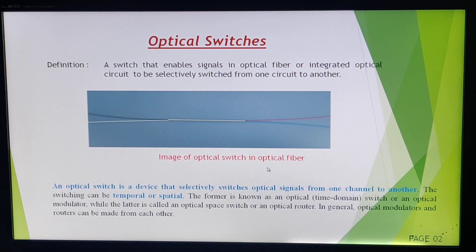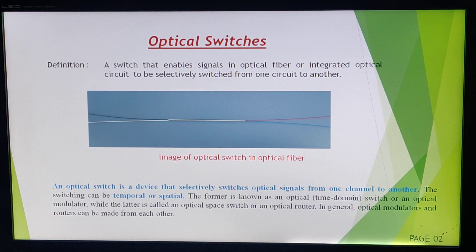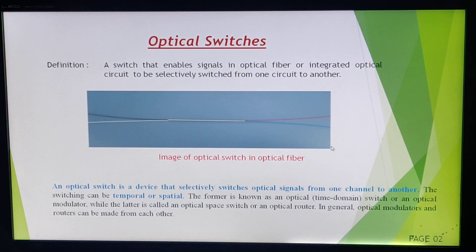There are two types of optical switching: one is temporal and the other is spatial. Whenever we consider time domain optical switching, it is known as an optical modulator. The latter is known as an optical space switch or an optical router. We can use either of them depending on our usage.